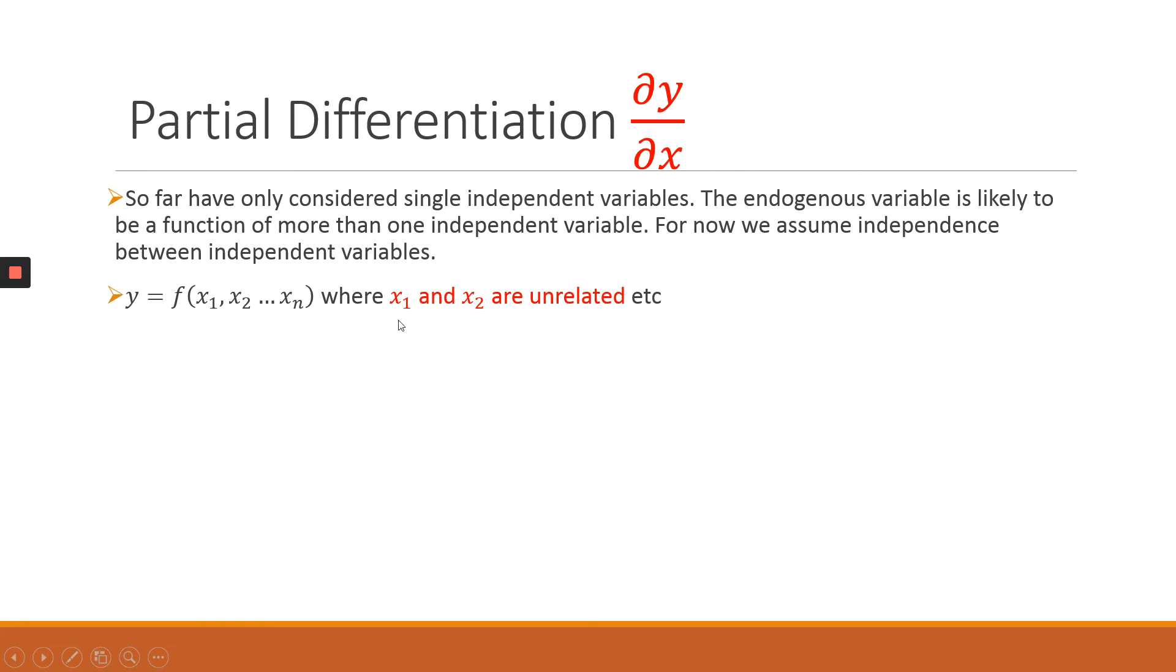One key assumption in such functions is that your x1 and your x2, they have to be unrelated. Same applies with x2 and x3, x3 and x4 up to xn. All the individual exogenous variables or independent variables are not related. Simply meaning that when x2 changes, it doesn't cause x1 to change. Or when x4 changes, it doesn't cause x3 to change or x1 or x2 to change.